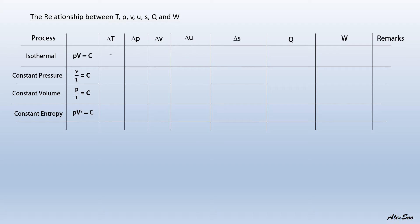For the isothermal process, the change in temperature is zero. According to Boyle's law, an increase in pressure will result in a decrease in volume, or a decrease in pressure will result in an increase in volume. The change in internal energy equals zero by Joule's law, which states that internal energy is directly related to absolute temperature — so when temperature is zero, internal energy change is also zero.